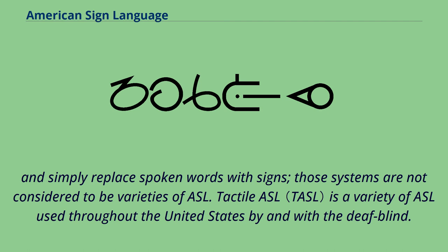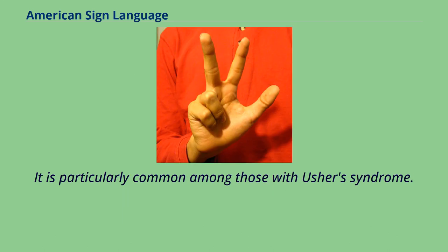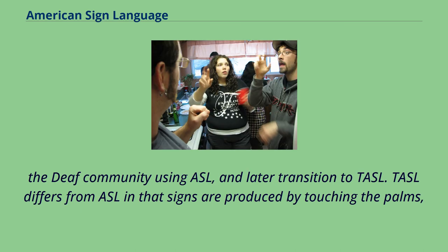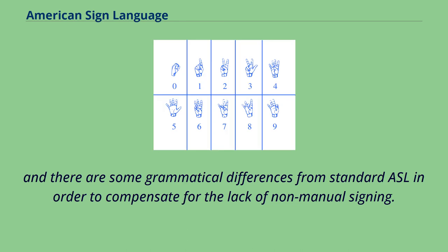Tactile ASL is a variety of ASL used throughout the United States by and with the deafblind. It is particularly common among those with Usher syndrome, which results in deafness from birth followed by loss of vision later in life. Consequently, those with Usher syndrome often grow up in the deaf community using ASL and later transition to TASL. TASL differs from ASL in that signs are produced by touching the palms, and there are some grammatical differences from standard ASL to compensate for the lack of non-manual signing.